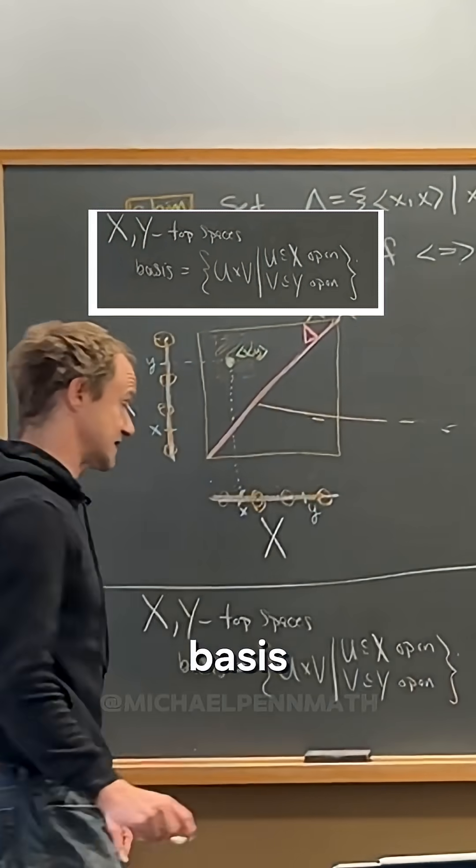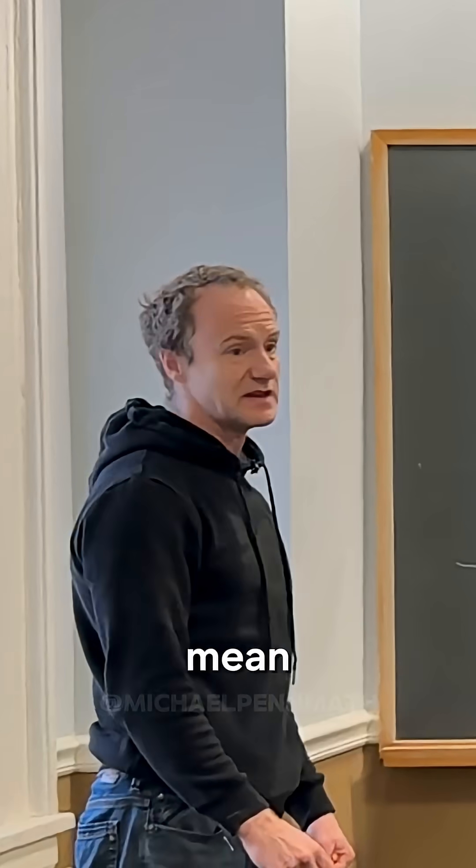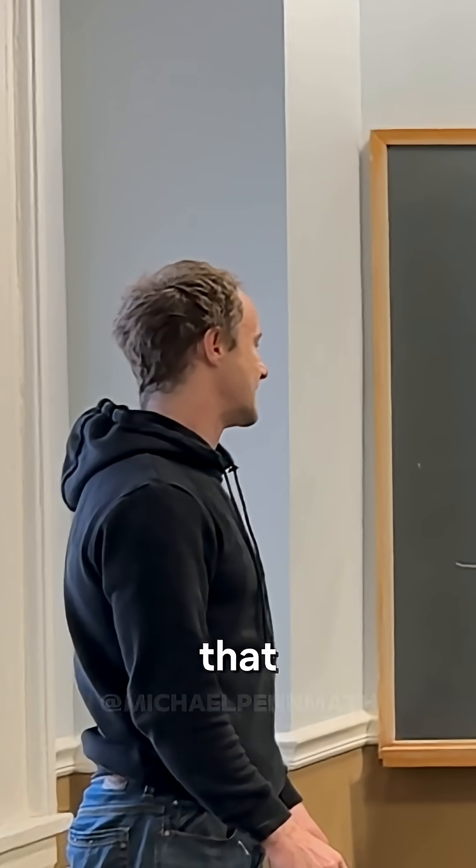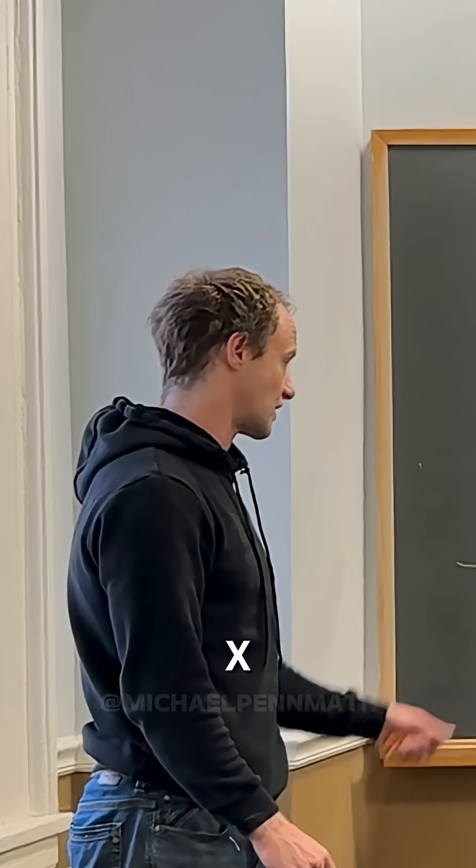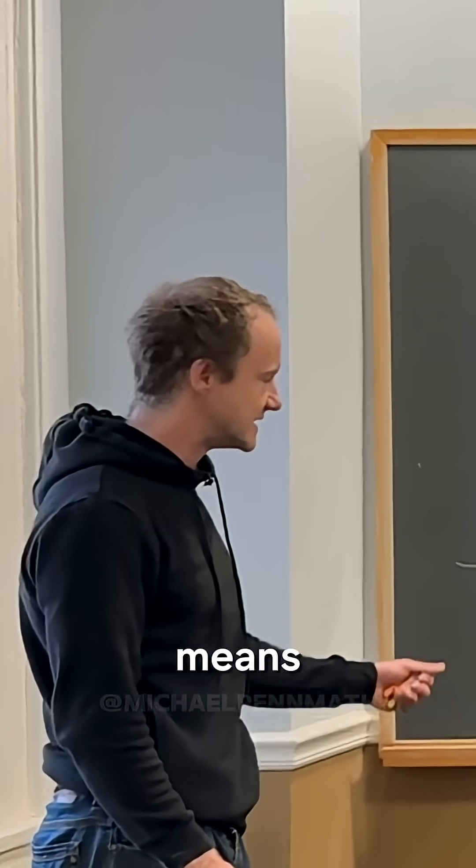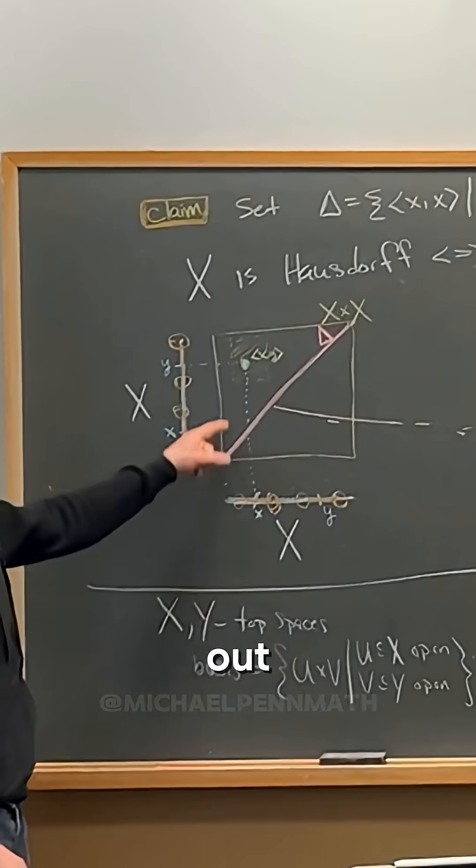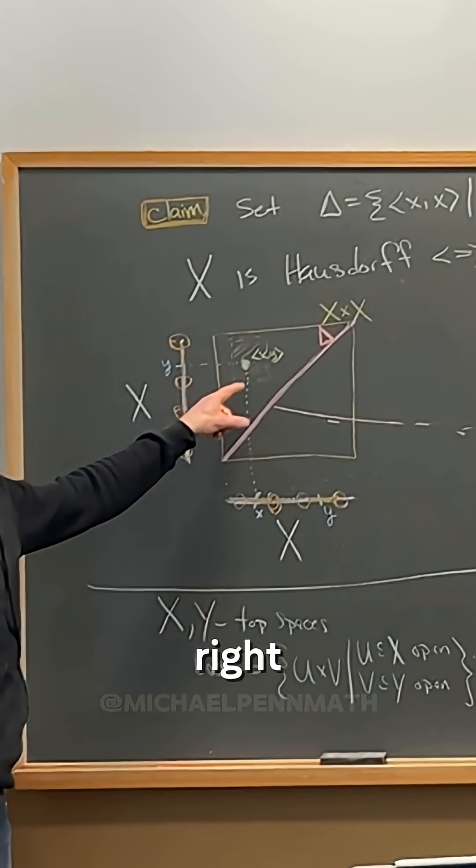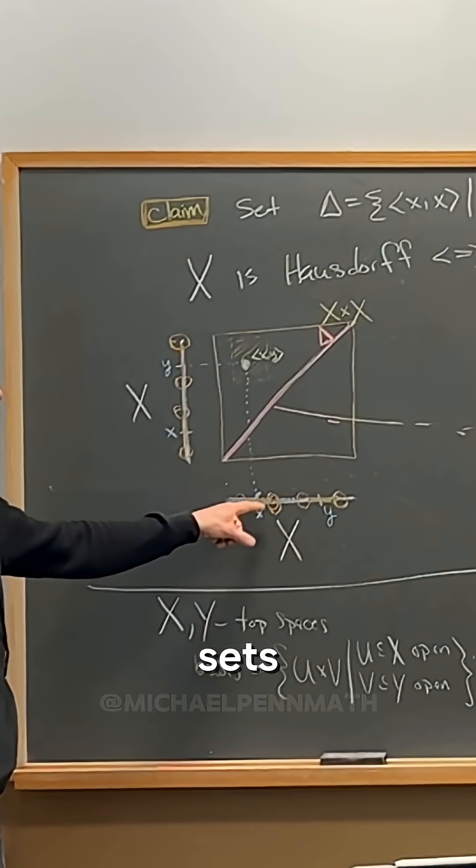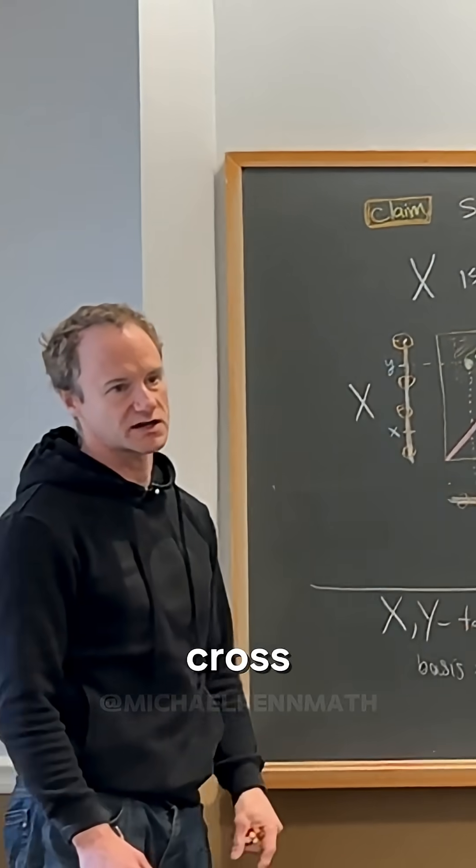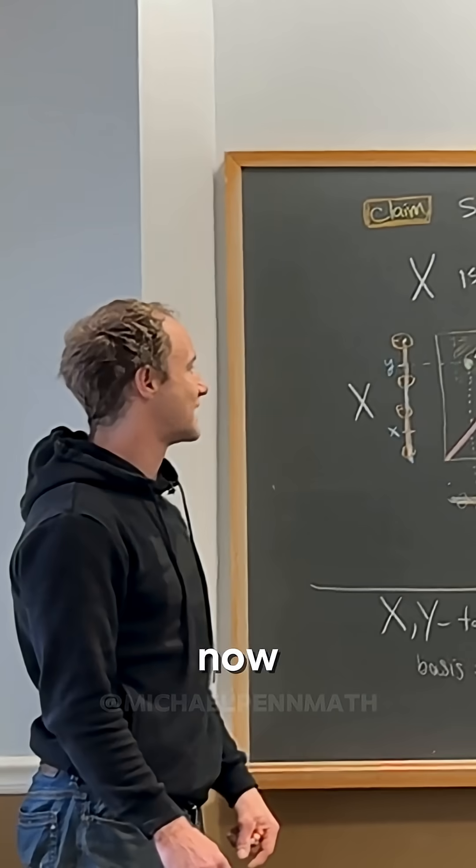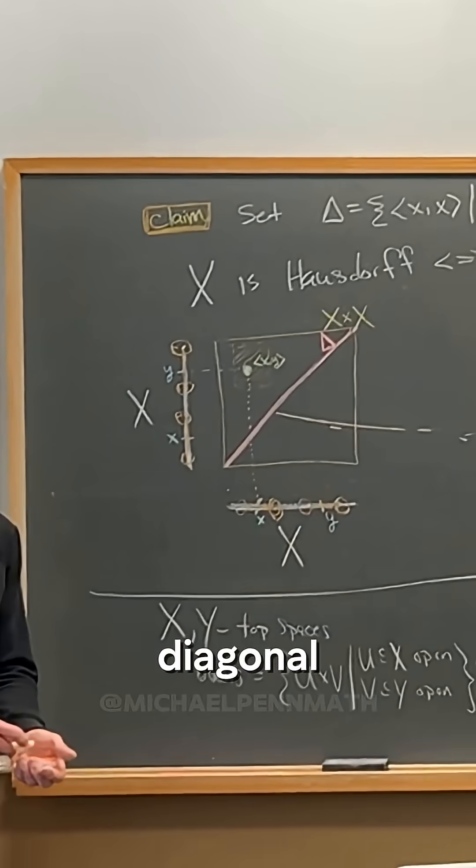Now that's a basis for the topology. That doesn't mean that everything that is open in X cross Y is of that form. It means that this is a basis for the open sets. So check it out - this cross thing right here is going to be open because it's actually one of the basis open sets, because this is open here and this is open here. So if you cross them it's going to be open here. So now that's the idea. It's going to miss the diagonal.